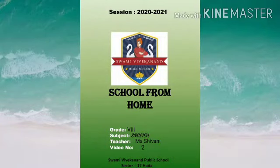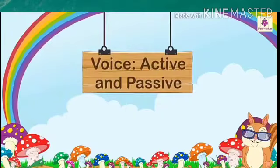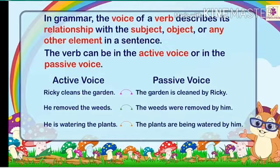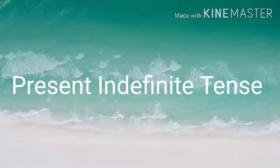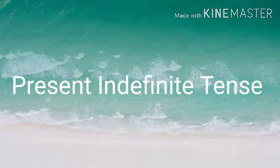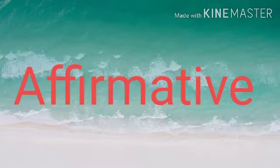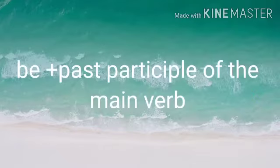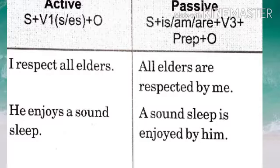Hello students, welcome back to your grammar class. We are doing active and passive voice, and in the previous video we learnt what are the two kinds of voice. We also learnt what is active voice, passive voice, and the five steps to be followed. The passive verbs in present tense are made up of two main parts: be plus past participle of the main verb. The form of the verb 'be' changes according to the subject and the tense — this you have to remember.